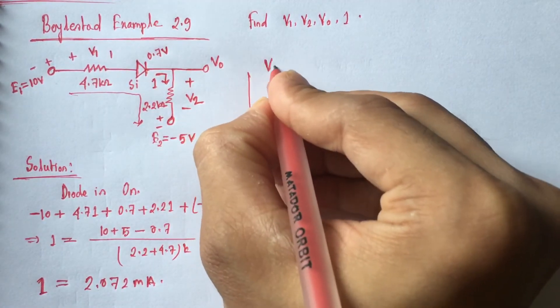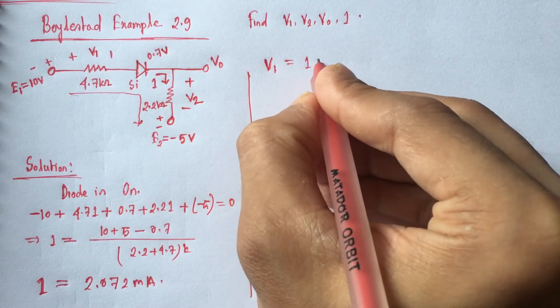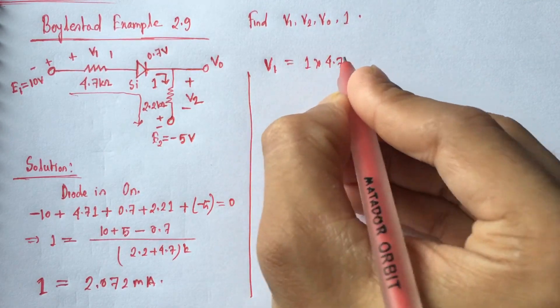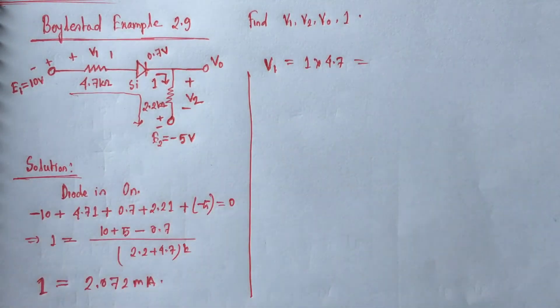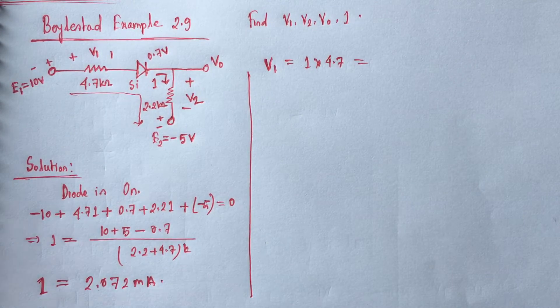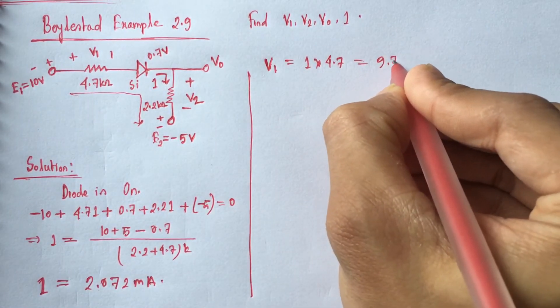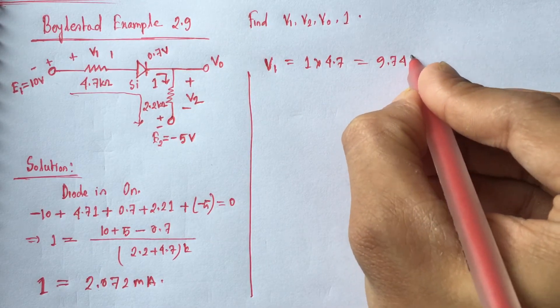Now V1 is equal I into 4.7 K, that is 9.74 volt.